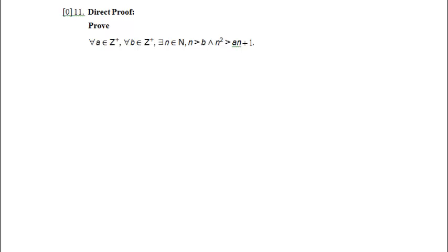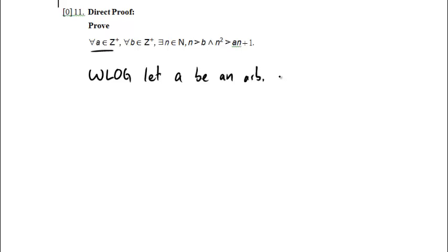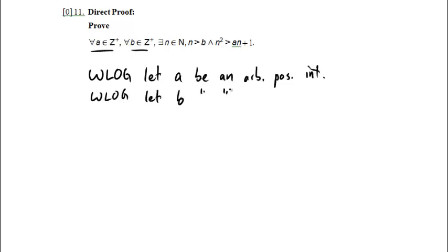My outermost operator is the universal quantifier, so I'm going to say: let a be an arbitrary positive integer. And then the next operator is another universal, so: let b be an arbitrary positive integer.